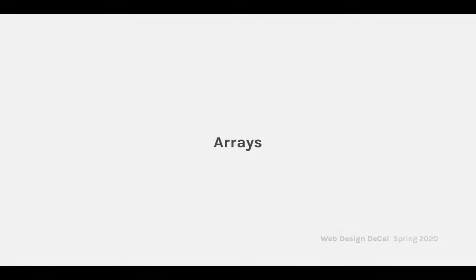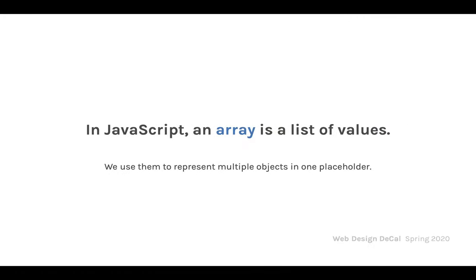The first main topic today is arrays. In JavaScript, an array is a list of values used to represent multiple objects in one placeholder. So far you've been assigning one thing at a time to each variable — like let var = 1 or let var = 'a string' — but with arrays you can assign multiple things in one variable.